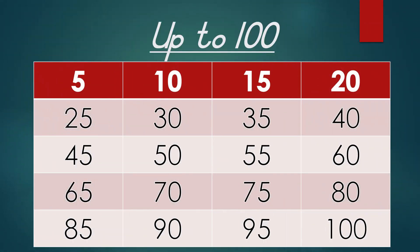When we are counting by fives, all of our numbers end with a 5 and a 0. 5 and a 0. Let's start.